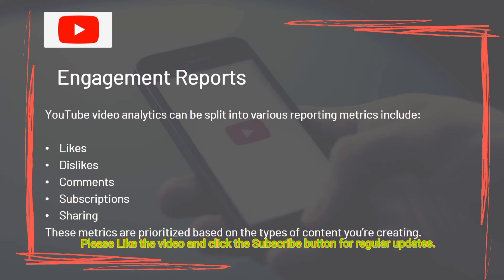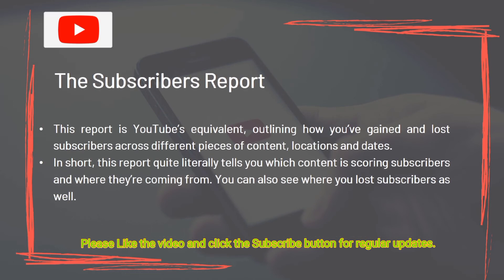Engagement Reports: YouTube Video Analytics can be split into various reporting metrics, including Likes, Dislikes, Comments, Subscriptions, and Sharing. These metrics are prioritized based on the types of content you are creating. The Subscribers Report outlines how you've gained and lost subscribers across different pieces of content, locations, and dates — it literally tells you which content is scoring subscribers and where they're coming from. You can also see where you lost subscribers as well.